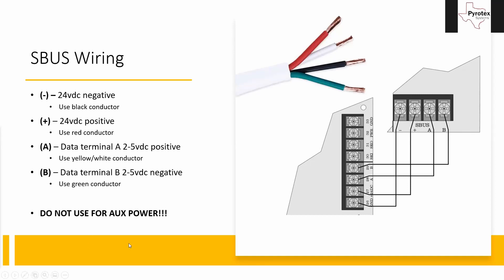One important note: do not use the positive and negative on the SBUS terminals for auxiliary power. Don't use it for door holders, your sprinkler bell, or to power a cellular dialer running off 24 volts. I know the Silent Night panels don't have a dedicated auxiliary power terminal, so it can be tempting to grab power off the SBUS terminals — but it's not made for that and can cause communication problems. It can pull that voltage down and cause problems with your power supplies in the field. There are other ways to accomplish those tasks, so pick up the phone and figure out the right solution.